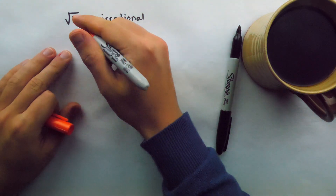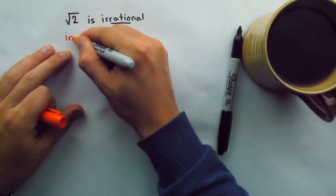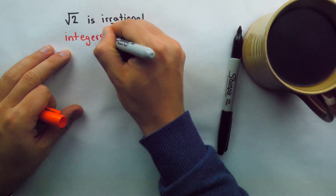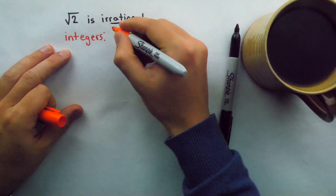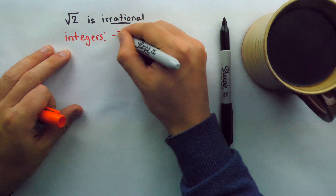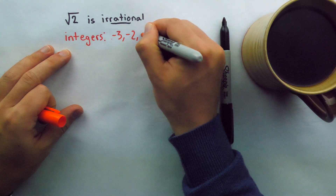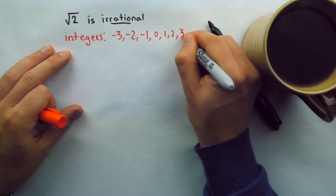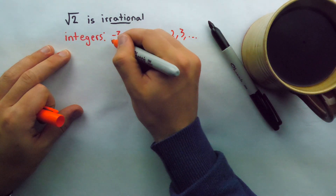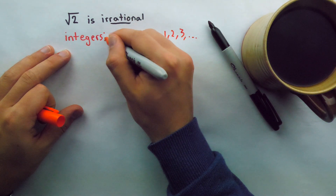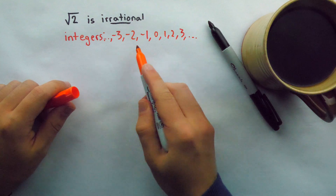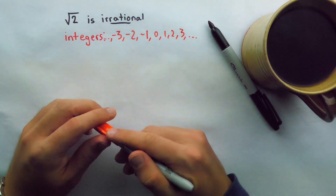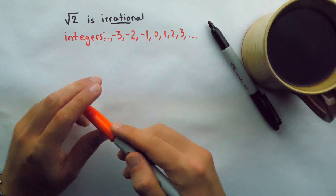Let's make sure we know what integers are. Those are just your whole numbers — positives, negatives, and zero. So we've got numbers like negative 3, negative 2, negative 1, 0, 1, 2, 3, etc. Integers are the numbers with no fractional part — all your negatives, your positives, 0 — just no fractions, no decimals in there.